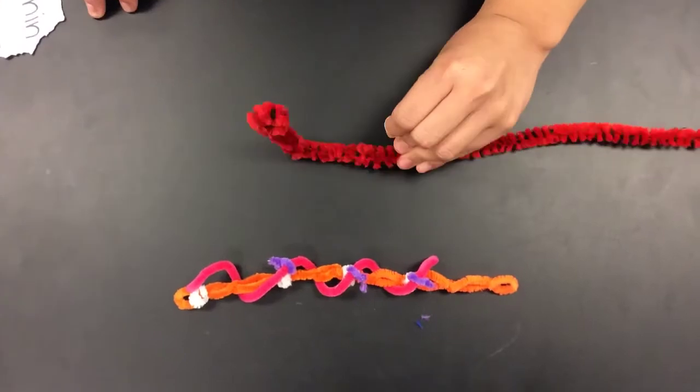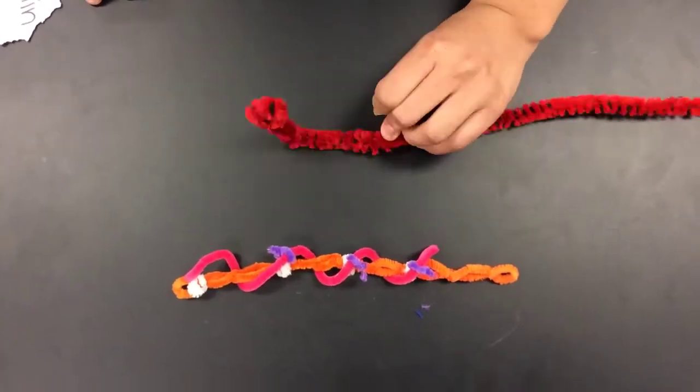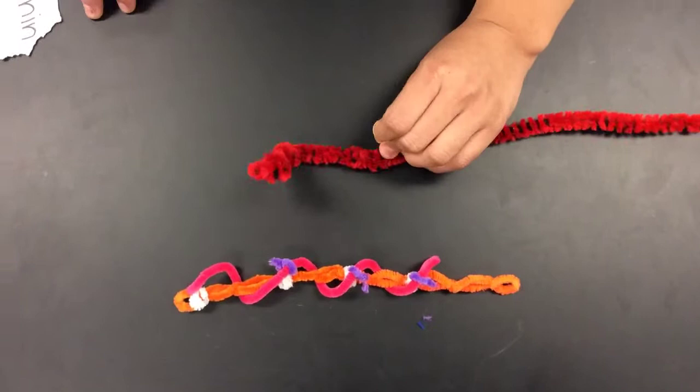Now these binding sites are blocked. The myosin head cannot attach the actin fiber. And therefore, contraction will not occur.